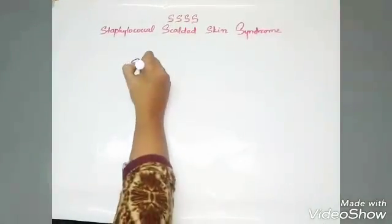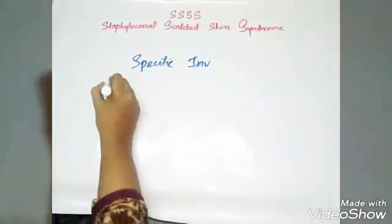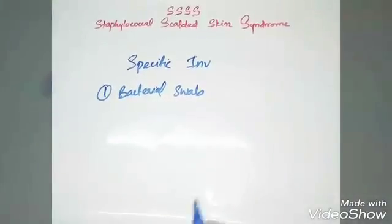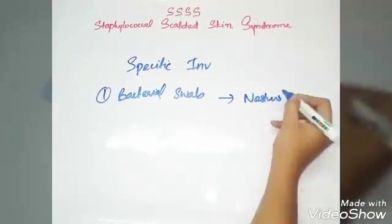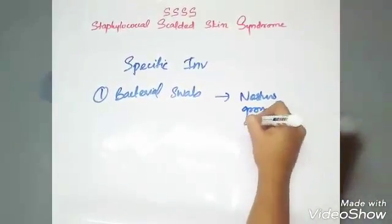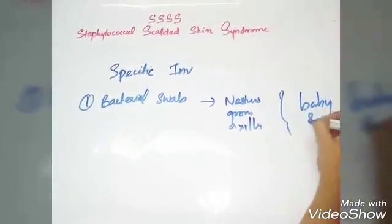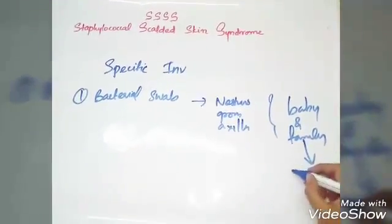Coming to specific investigations, first one is bacterial swab. We need to take bacterial swab from nostrils, groin, axilla of baby and family members, because we need to exclude staphylococcal carriage.